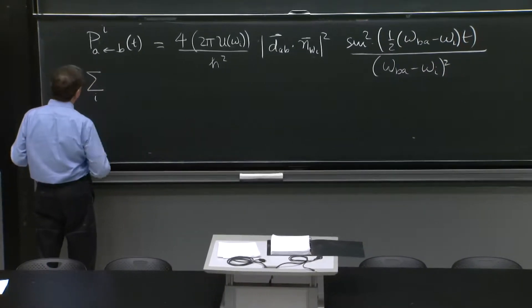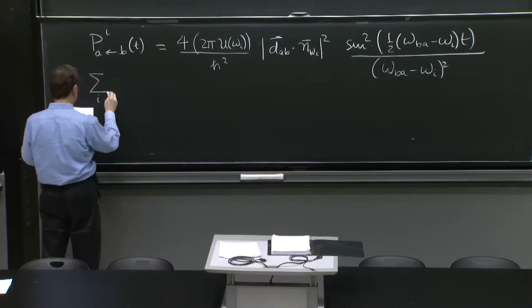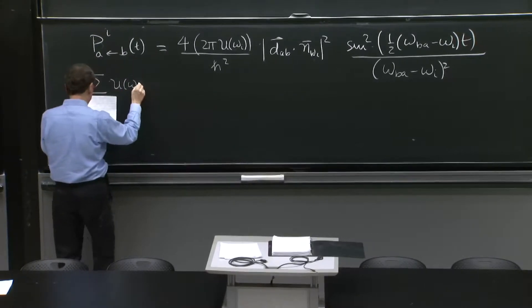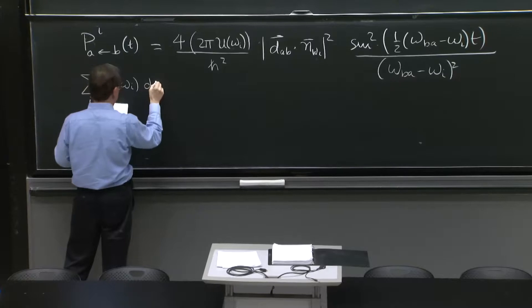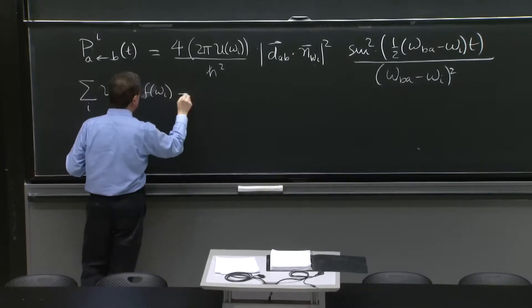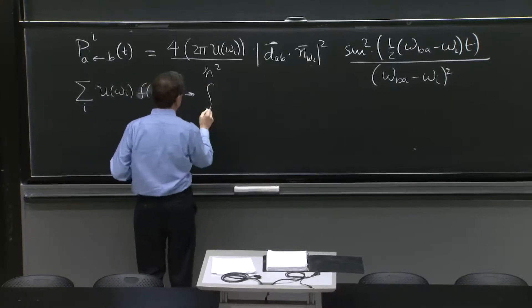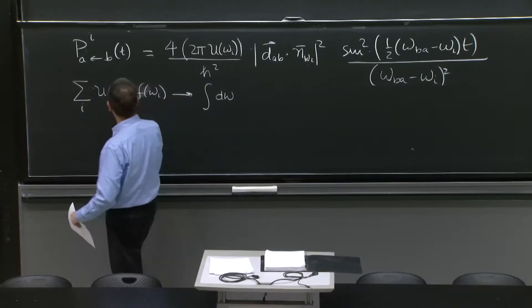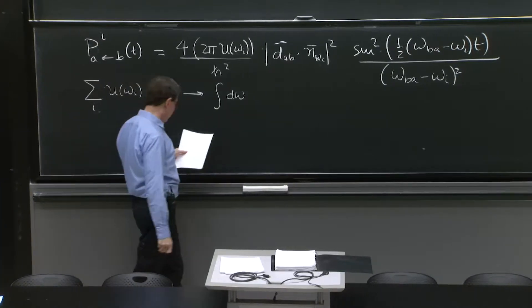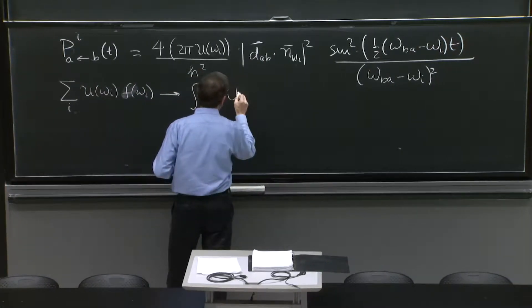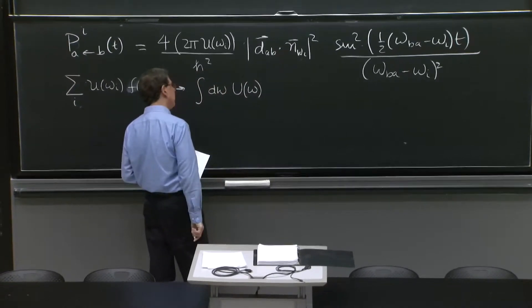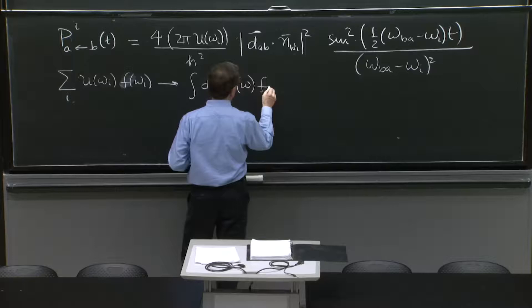So the way to sum probabilities is: if you have a sum over i of the frequencies omega i of some energy density u of i times any function of omega i, you can replace it by an integral d omega. Instead of little omega i's that you're summing, you now integrate over omega the energy density of your radiation field times the function of omega.